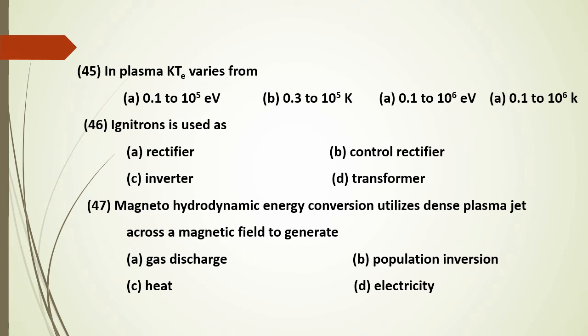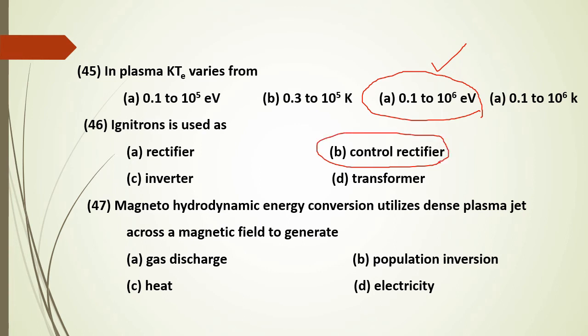The plasma KE (kinetic energy) varies from 0.1 eV to 10^6 eV, and the density n varies over many orders of magnitude. Plasma can be used as a controlled electrical medium in various applications.